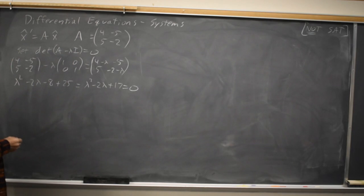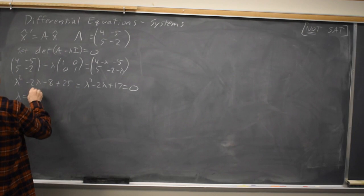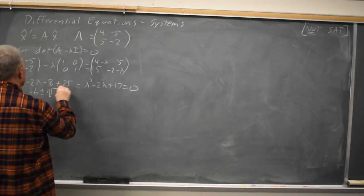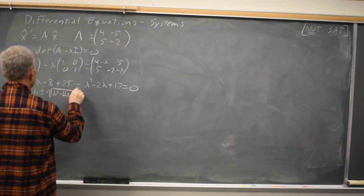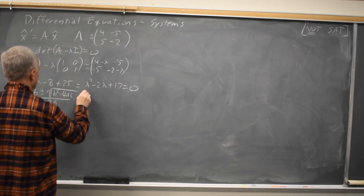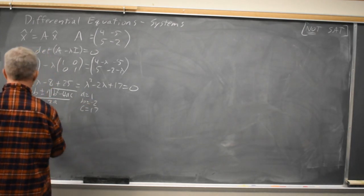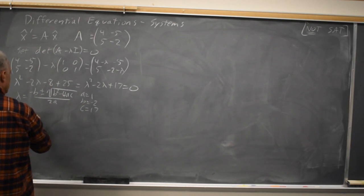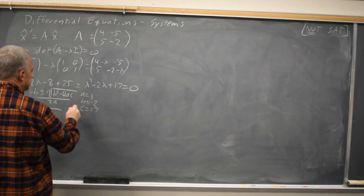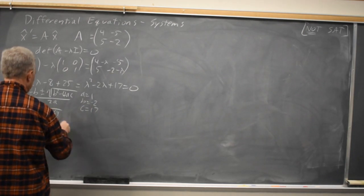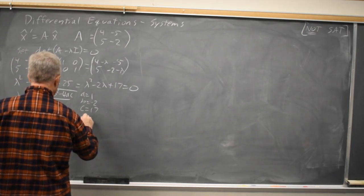Solving that with the quadratic formula, because it obviously doesn't factor, lambda equals negative B plus or minus square root B squared minus 4AC all over 2A, where A equals 1, B equals negative 2, C equals 17. Lambda equals minus negative 2 is positive 2, plus or minus root 4 minus 68 is negative 64 over 2. That is 1 plus or minus 8I over 2, which is 1 plus or minus 4I.